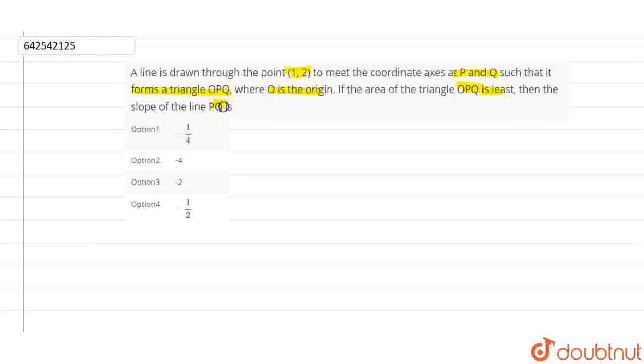Then the slope of line PQ. So first what I'll do, I'll basically make coordinate axes. Then we'll plot this graph. So suppose these are coordinate axes. And there's a line which is passing through the point. Let's suppose this point is 1, 2. So if I draw a line along this point, this will be something like this.